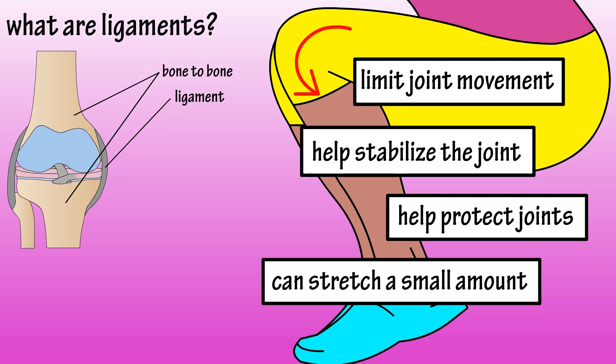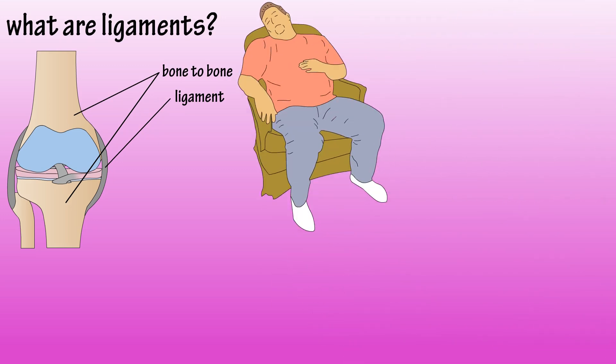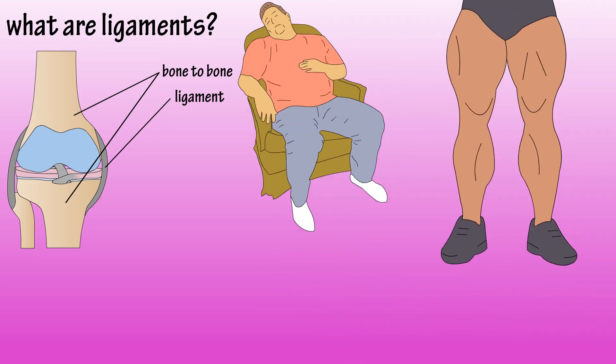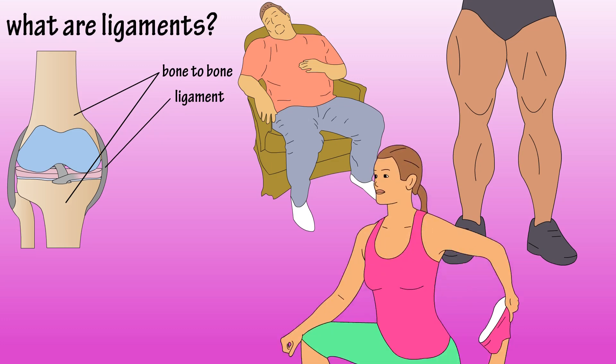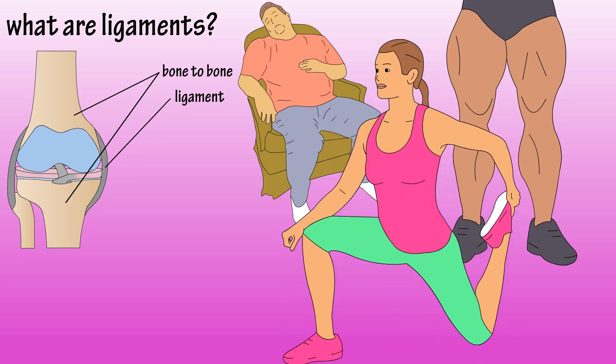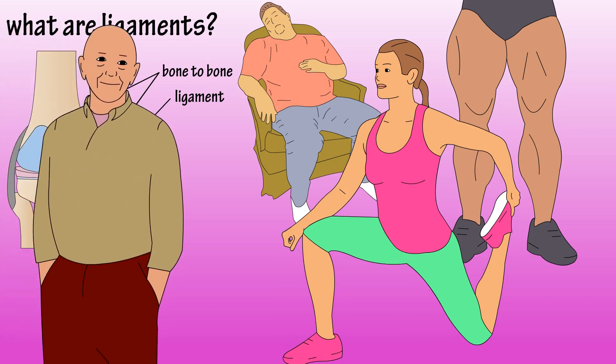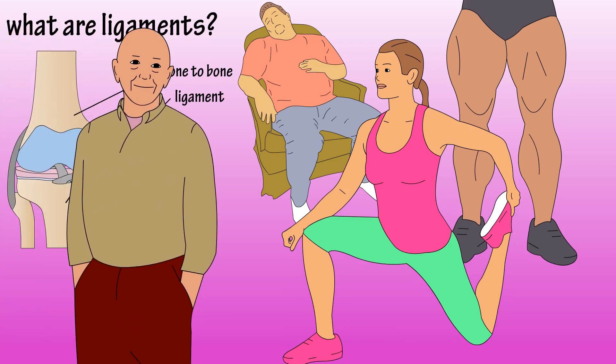Several things can affect ligaments, which in turn can affect a joint's range of motion or restrict flexibility. Inactivity and overdeveloped muscles can have negative effects on joints and range of motion. Overstretching can damage ligaments and decrease joint stabilization, and aging can negatively affect ligaments and joints, but regular exercise can delay this process.